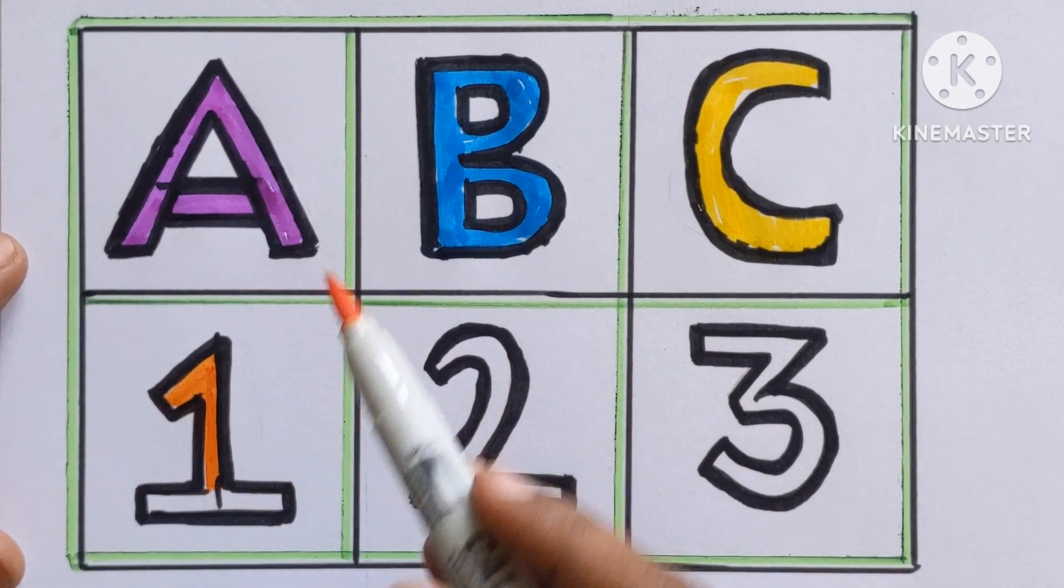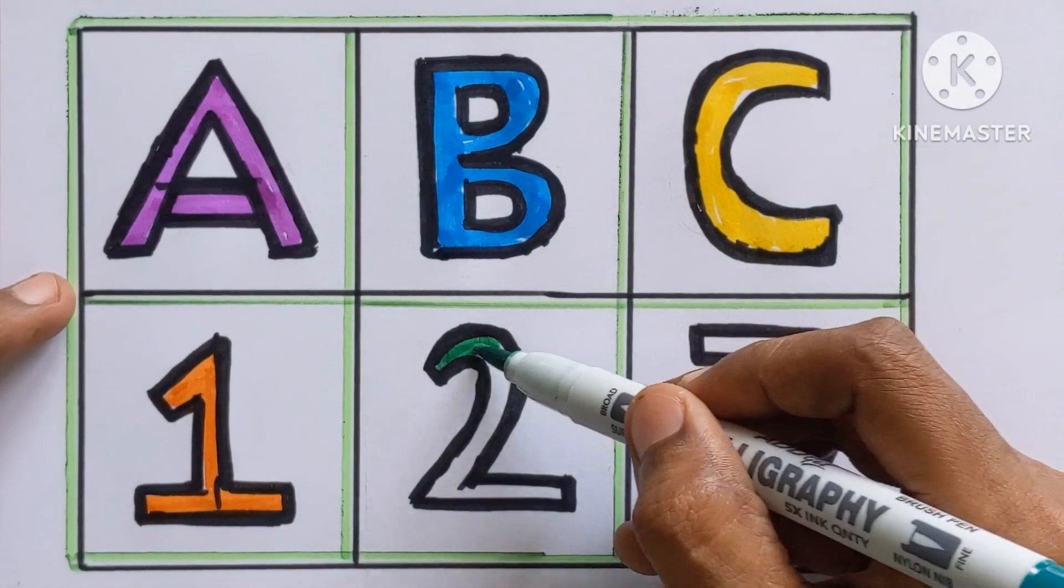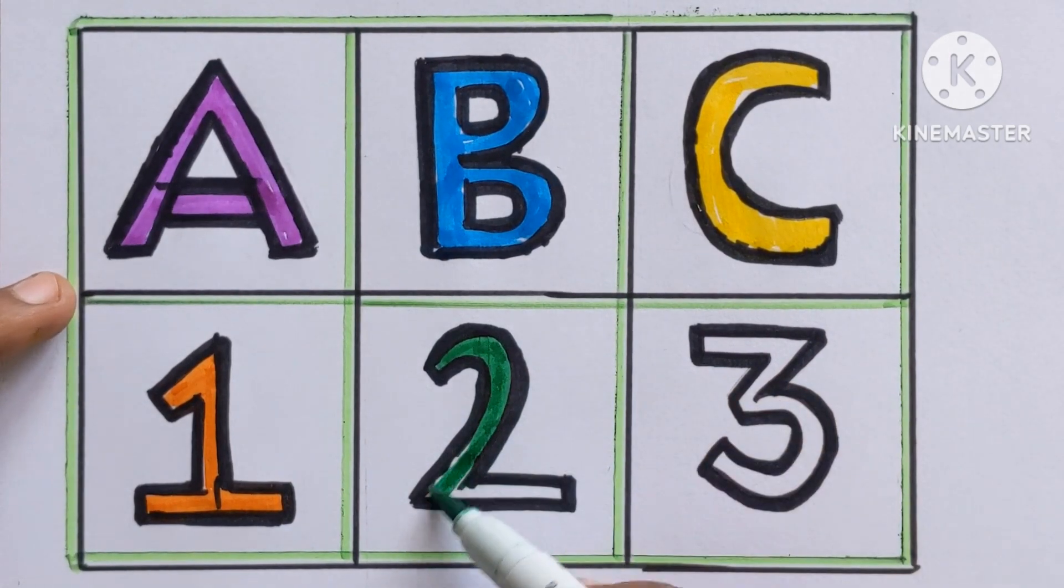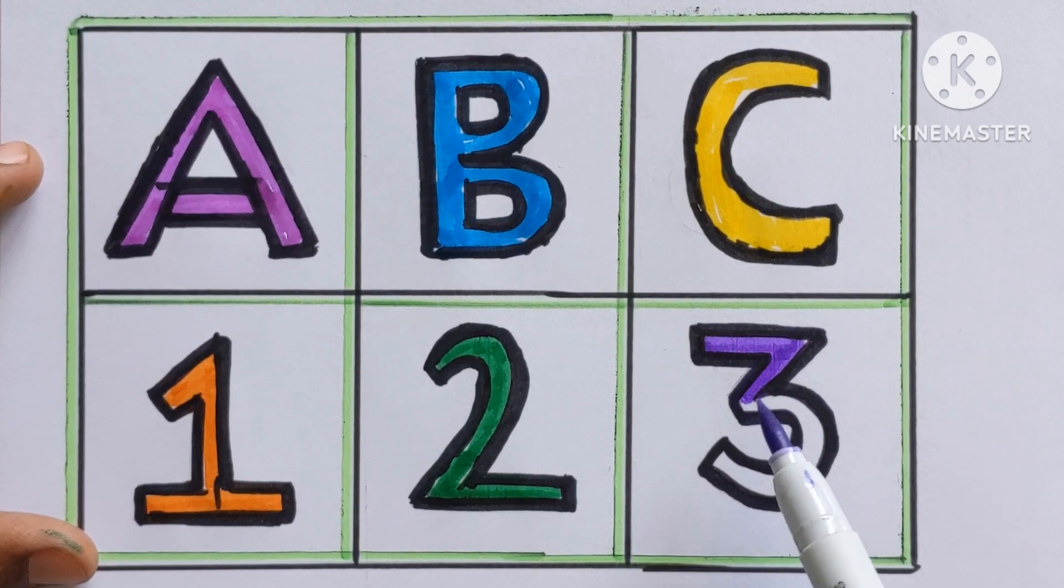Number 1, orange color. Number 2, dark green color. And number 3, violet color.